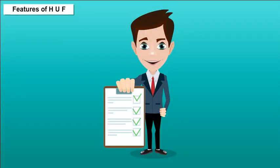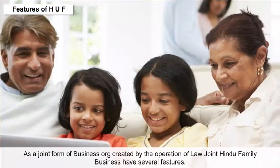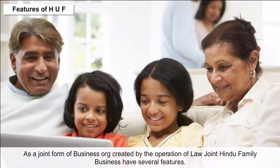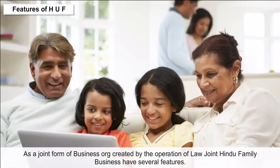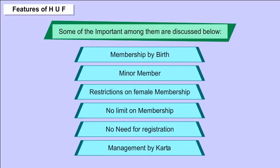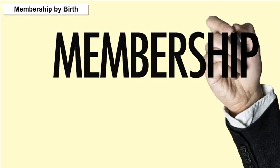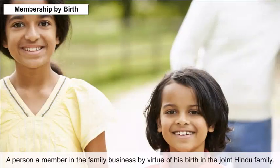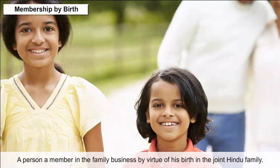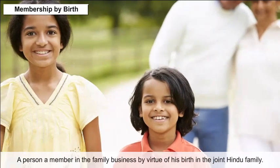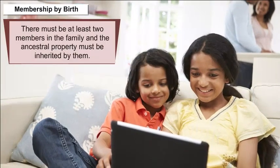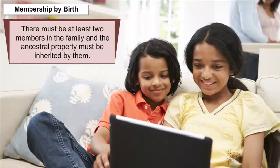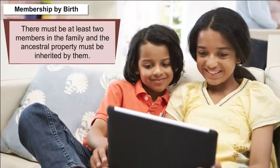Features of HUF: As a joint form of business organization created by the operation of law, joint Hindu family business has several features. Membership by birth: A person becomes a member in the family business by virtue of his birth in the joint Hindu family. No formal agreement is necessary. There must be at least two members in the family, and the ancestral property must be inherited by them.